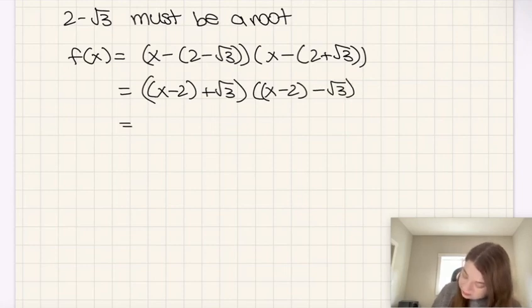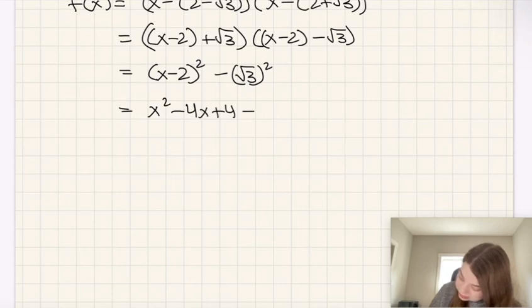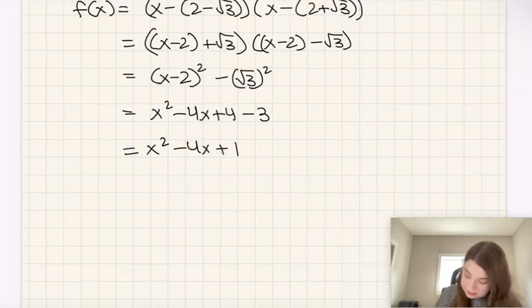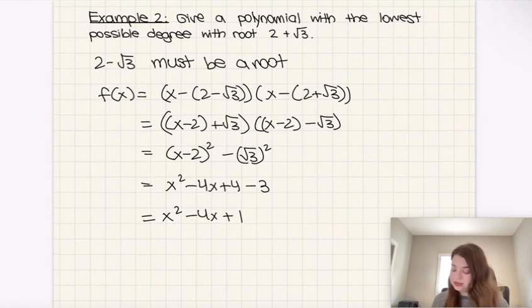So then we're going to have x minus 2 squared minus root 3 squared, which is going to give us x squared minus 4x plus 4 minus 3, which is going to give us x squared minus 4x plus 1. And so there's our answer, that to give a polynomial with lowest possible degree with this root, it must also have this other root, 2 minus root 3. And so here's an example of a polynomial that fits that description.